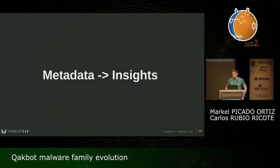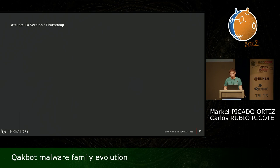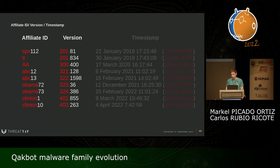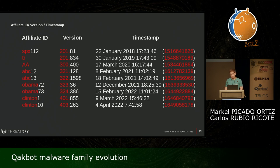We have been extracting a lot of metadata from all these samples and obtained some insights. We have been using mainly three parameters: the affiliate ID, the version, and the timestamp. The affiliate ID format has a first part related to the affiliate and a second part that in our opinion represents the campaign number, which increments over time. The version number is the version the sample has, and the timestamp is when the sample was built. Using this information, we have been creating different graphs to represent and obtain insights.